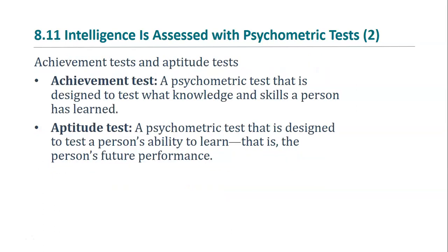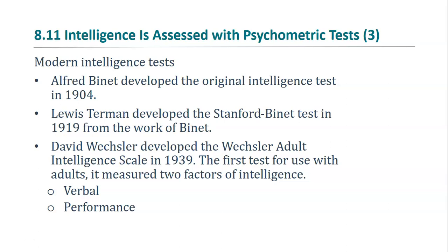We can also differentiate between achievement tests and aptitude tests, though there is some overlap. Achievement tests are designed to study what you have learned, while aptitude tests are designed to study what you can learn. Intelligence tests started with Binet's original test in 1904. In 1919, Lewis Terman, a psychologist at Stanford, adapted Binet's test and renamed it the Stanford-Binet. Today the Stanford-Binet is still used, but more commonly used is the Wechsler test — in particular, the Wechsler Adult Intelligence Scale, which premiered in 1939 and has been updated multiple times since.